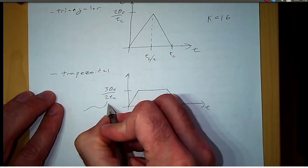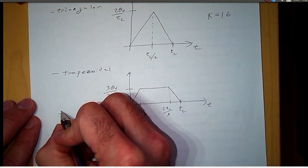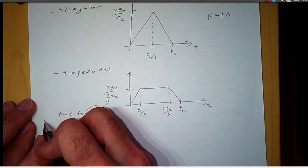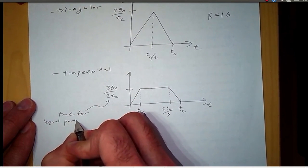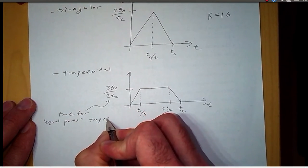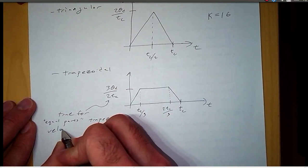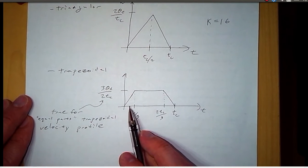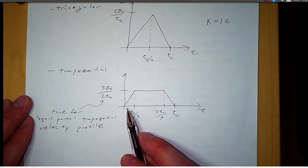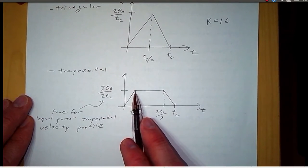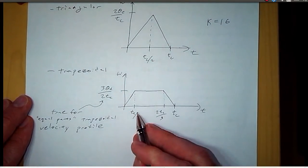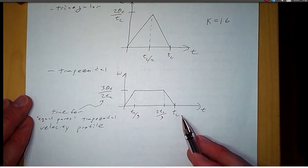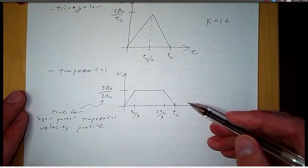But this is only true for this equal parts trapezoidal velocity profile. What I mean by equal parts is that the three different sections for velocity take up equal time. So we're increasing speed at a constant rate for one-third of our total time. Then we hold a constant velocity for one-third of the total time. And then we decrease at a constant rate for one-third of the total time.